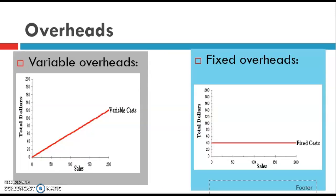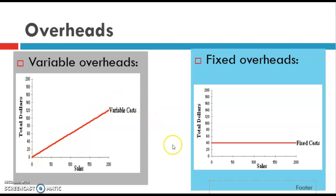I always like looking at pictures to help understand things better. The variable overheads change according to the number of units made and sold — you can see it increases as you sell more and more. Whereas the fixed overhead cost stays the same the whole time, regardless of how many are made.